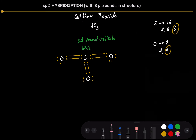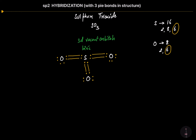Now let's come to the types of bonds. Whenever there is a formation of a double bond between two atoms, out of those two bonds one will always be sigma and the other will be pi. So the sigma and pi bond are marked between the 1st oxygen and sulfur, the 2nd oxygen and sulfur, and the 3rd oxygen and sulfur. In total we are having 6 covalent bonds in the structure, out of which 3 bonds are sigma bonds and the other 3 are pi bonds.